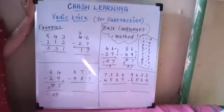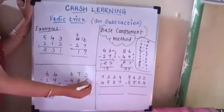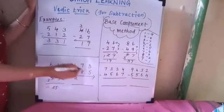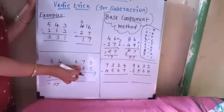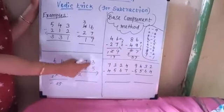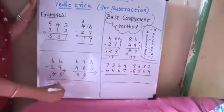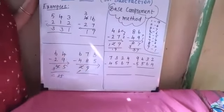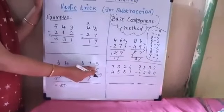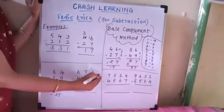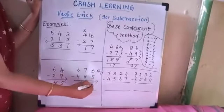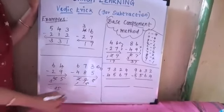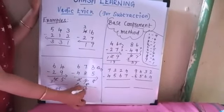Now let us go with 3-digit subtraction. Start from left to right. What is 6 minus 4? That is 2. Then 7 minus 8 is not possible, so complement of 8 is 2; 2 plus 7 is 9 — make it 9, then reduce the previous digit: you get 1. Go to the last digit — complement of 5 is 5; 5 plus 3 is 8. We took complement, so reduce by 1. The answer is 188.